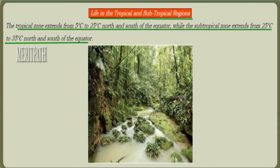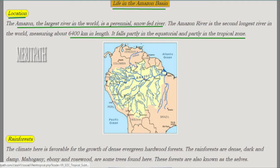In this image we see the tropical regions — life in the Amazon Basin. The Amazon River is located in the equatorial zone and also in the tropical zone. This is the largest river in the world. It is a perennial river and the second longest river in the world, measuring 6,400 kilometers in length.